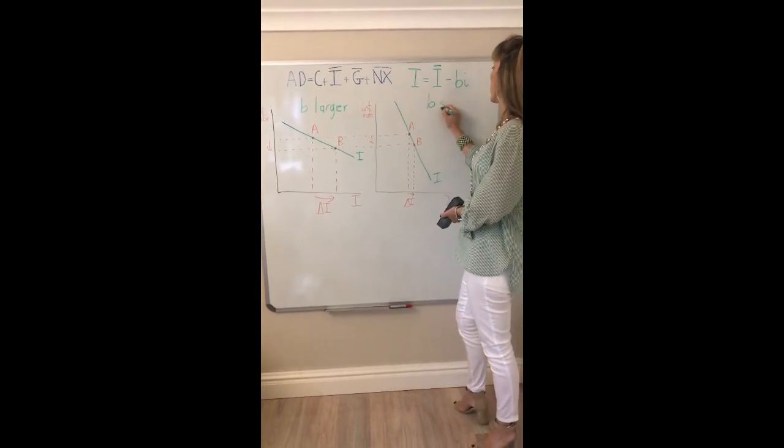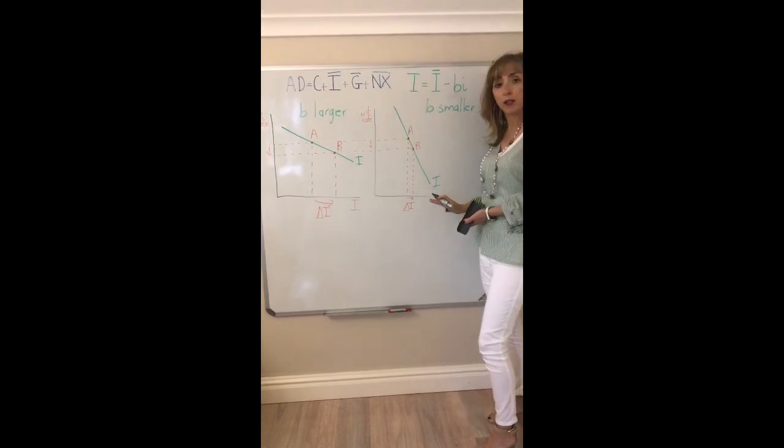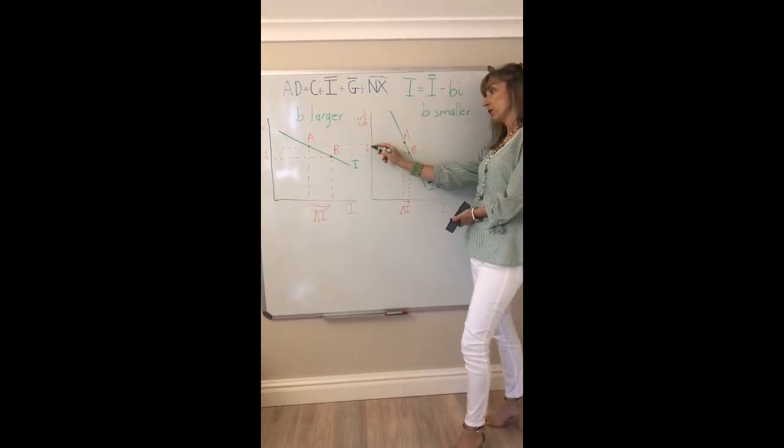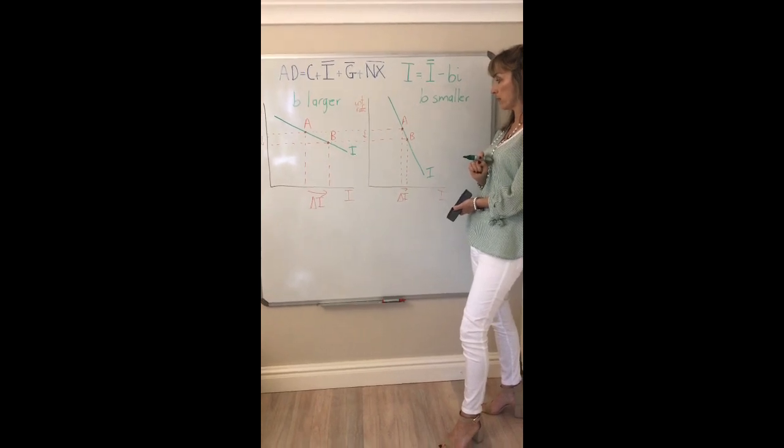As opposed to this situation where B is smaller, we get a steeper investment schedule showing you that a given change in the interest rate leads to a smaller proportional change in planned investment.